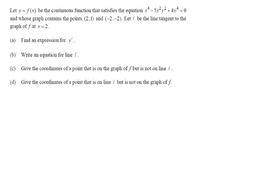In the next problem, we have y equals f of x is a continuous function that satisfies this equation x to the 4th minus 5x squared y squared plus 4y to the 4th equals 0. And its graph contains the points (2, 1) and (-2, -2). Finally, we're going to let l be the line tangent to the graph of f at x equals 2.